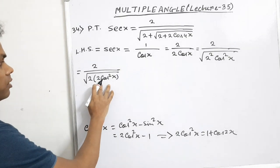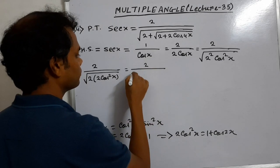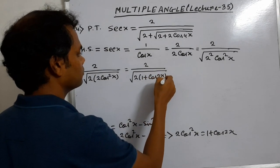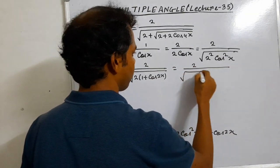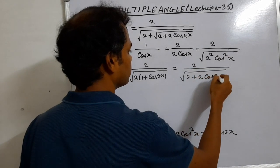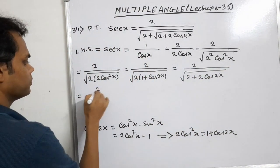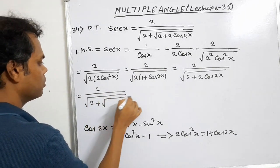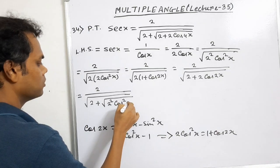So this 2 cos squared x is replaced by 1 plus cos 2x, giving us 2 by the square root of 2 into 1 plus cos 2x, which simplifies to 2 by the square root of 2 plus 2 cos 2x. Again, we address the 2 cos 2x term.